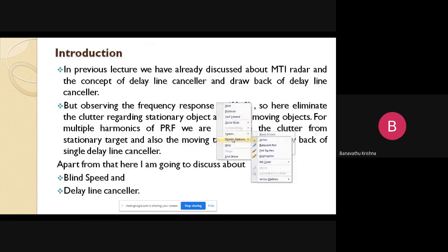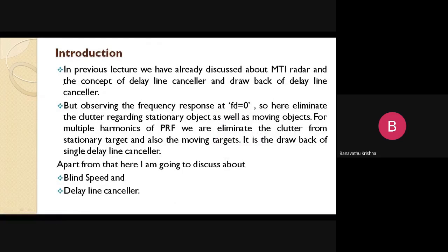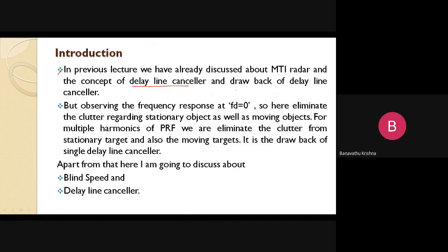Coming to the introduction: in the previous lecture we already discussed about MTI radar and the concept of the delay line canceller and the drawback of the delay line canceller. By observing the frequency response, fd equal to zero — that is the response of the single delay line canceller, which is 2k sin(π·fd·Tp), where fd is the Doppler frequency response of the system. If fd equals zero, we eliminate the clutter.